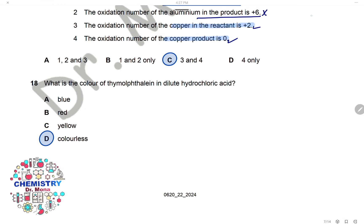Question 18: What is the color of thymolphthalein in dilute hydrochloric acid? Thymolphthalein is colorless in acid media. The answer is D.